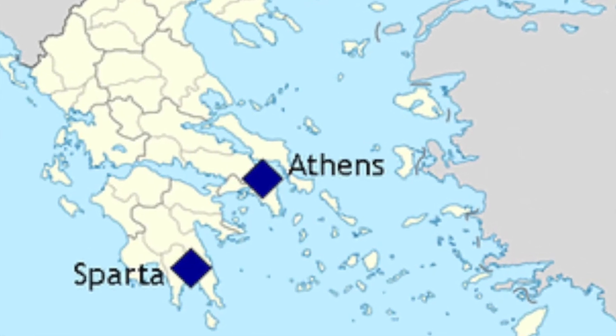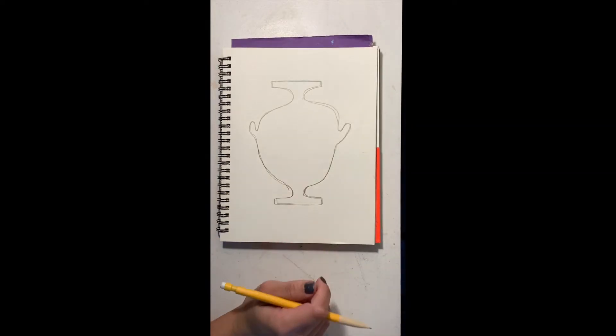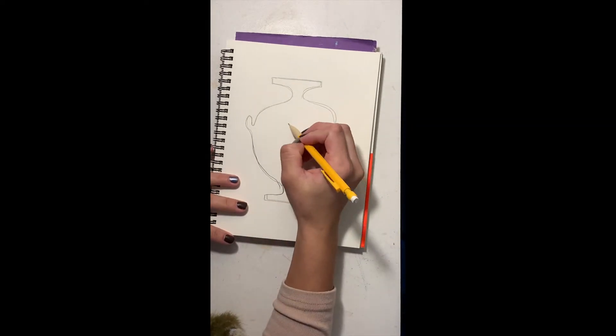And Sparta is in Greece. You can see it on the map there. So a Spartan helmet is the perfect thing to draw on my Greek pottery here.